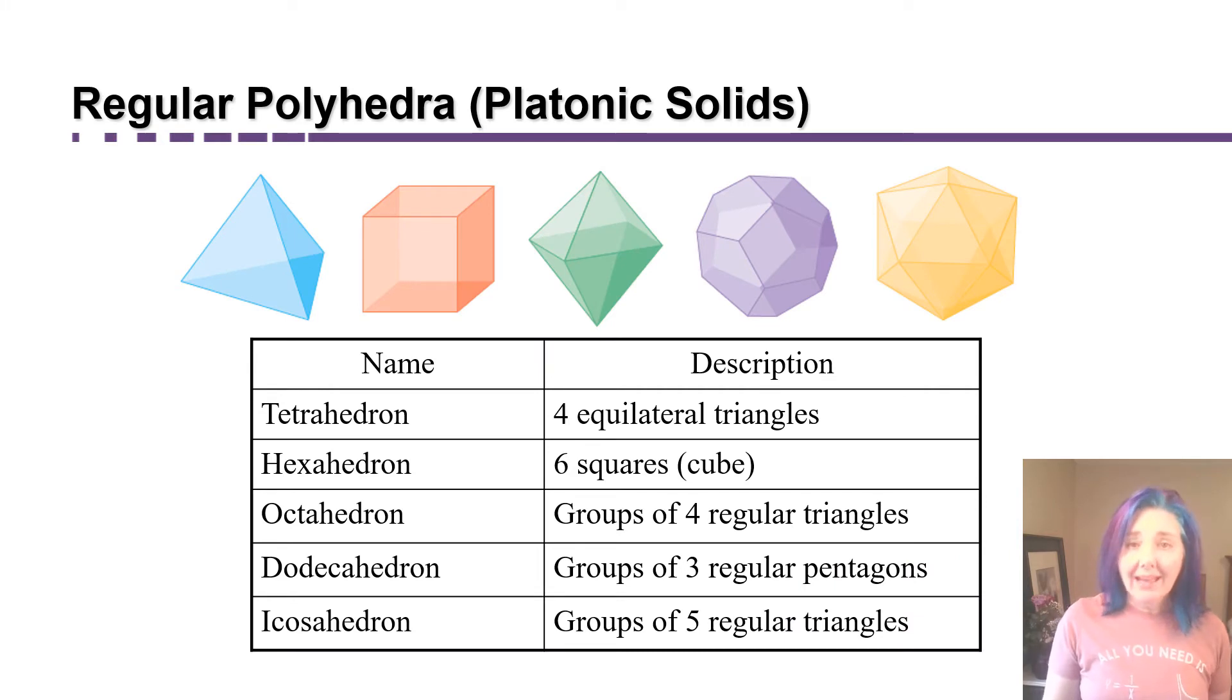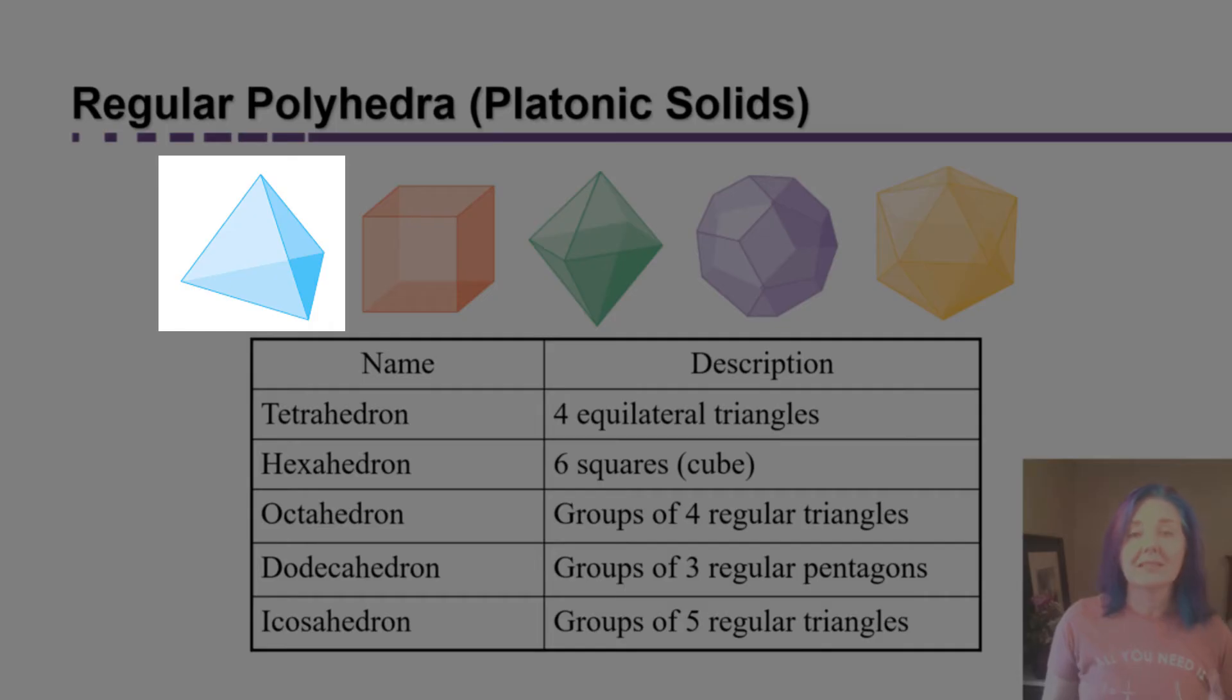There's a special category of polyhedra called the platonic solids, which are made up of regular bases. For example, a tetrahedron is made up of four equilateral triangles.